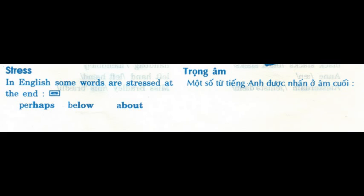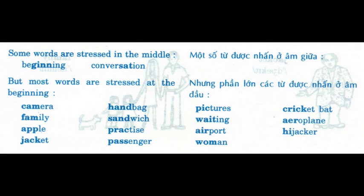Stress. In English, some words are stressed at the end: perhaps, below, about. Some words are stressed in the middle: beginning, conversation. But most words are stressed at the beginning. Listen and repeat: camera, family, apple, jacket, handbag, sandwich, practice, passenger, pictures, waiting, airport, woman, cricket bat, aeroplane, hijacker.